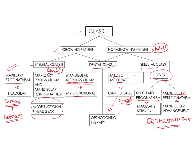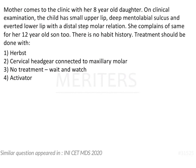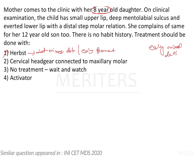If it is just a dental Class II and not a skeletal Class II, whether it is a growing or non-growing patient, you will only do orthodontic therapy to correct it. Now looking at the answer options one by one: the first is the Herbst appliance. It is given in the late mixed dentition or early permanent dentition. The age of this child is eight years, so she is in her early mixed dentition — so the Herbst appliance is not indicated.